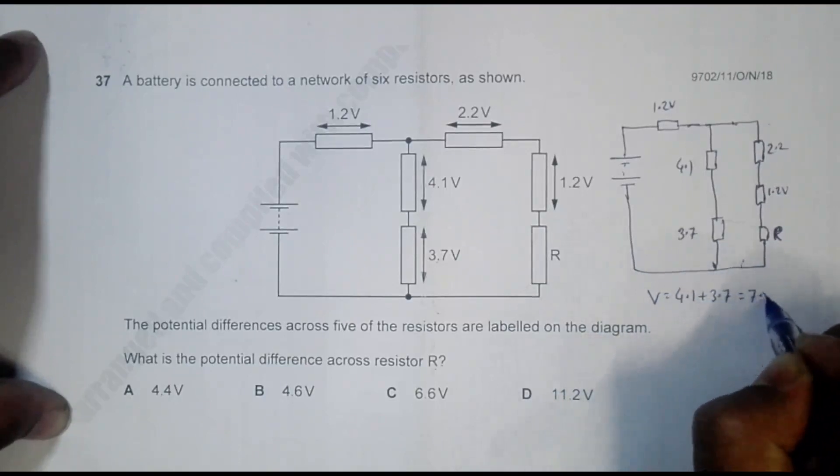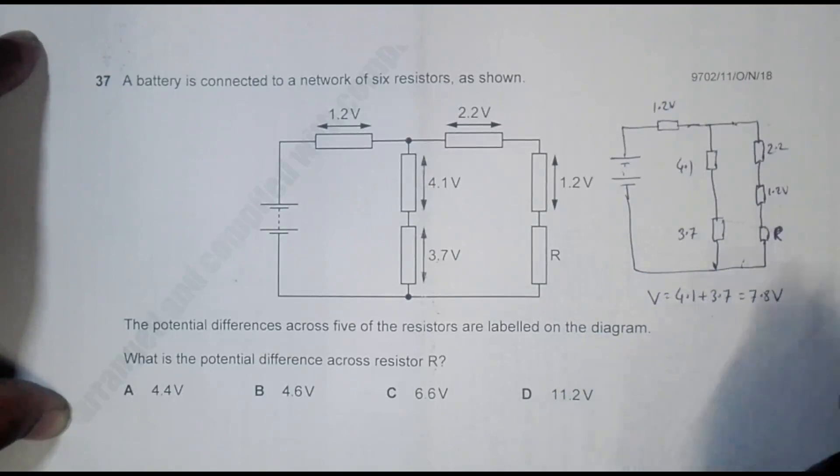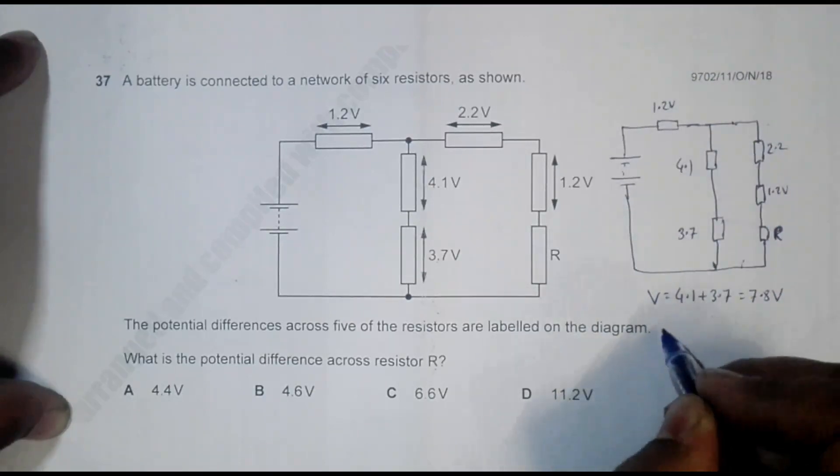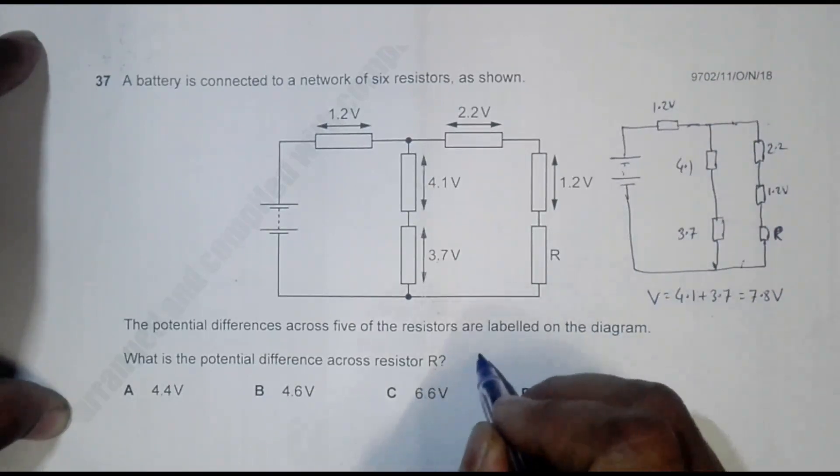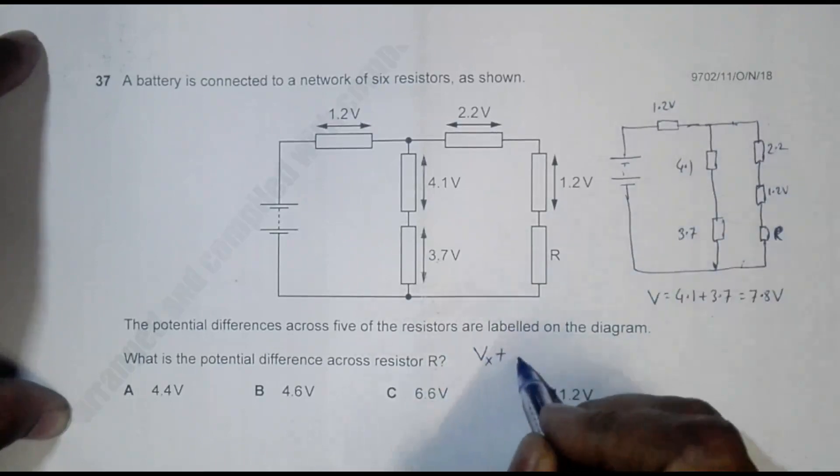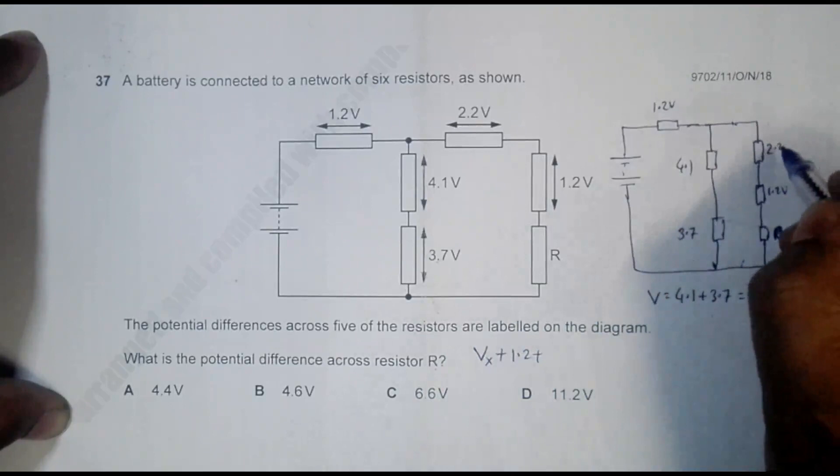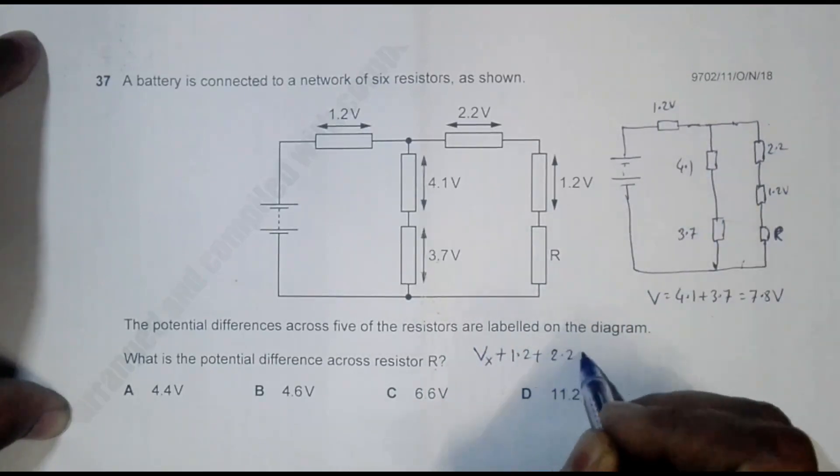So that means here also I should have this unknown V, Vx let me say, plus this V which is 1.2, plus this V which is 2.2, should be equal to this PD which is 7.8 volt.